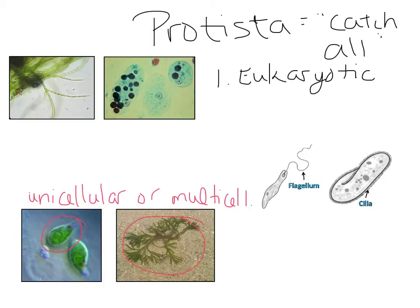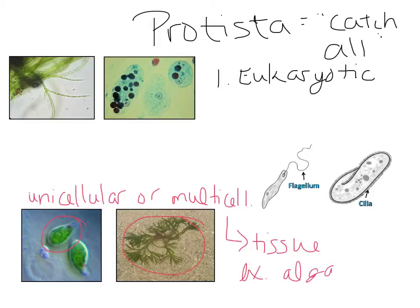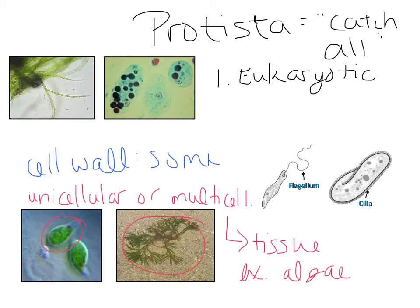As a general rule, if they're multicellular, they are not organized much past the tissue level. Tissues are groups of cells that work together. Multicellular protists are not going to have organs or organ systems — they would just have tissues. An example of that would be algae. As for cell walls, some protists have a cell wall and some do not.